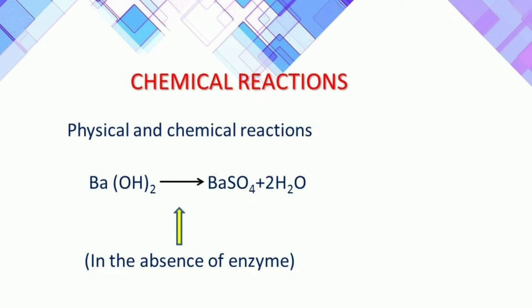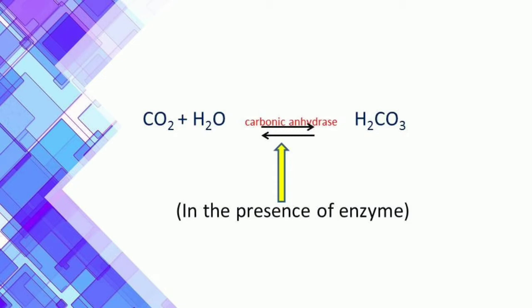In the presence of an enzyme, the reaction is sped up. For example, carbon dioxide and water in the presence of carbonic anhydrase — an enzyme and catalyst — produces carbonic acid. In the absence of an enzyme, the reaction will be slow, but in the presence of an enzyme the reaction will be about 10 million times faster. That is the power of an enzyme.